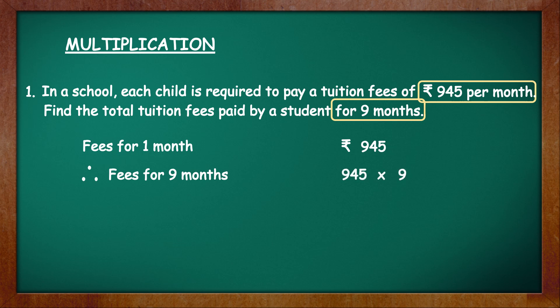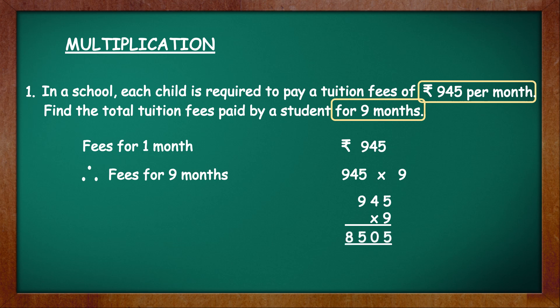Write that multiplication statement 945 into 9 and then do the multiplication below. 945 into 9 — when you multiply, the product is 8505. Write the answer with the unit. The unit here is rupees, which is written before the number. So the answer is equal to rupees 8505.